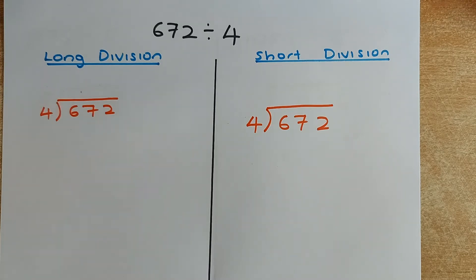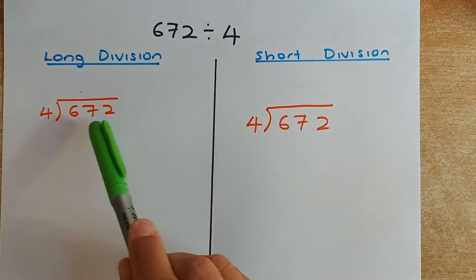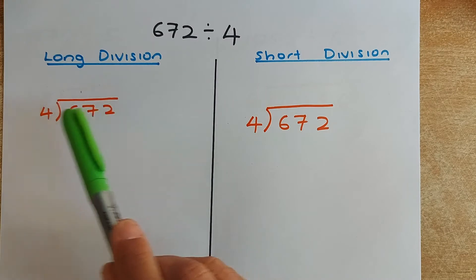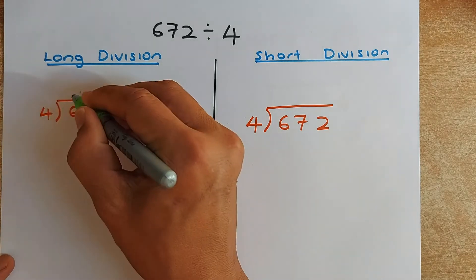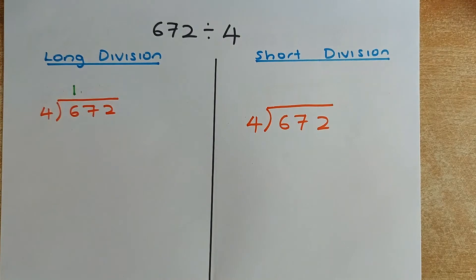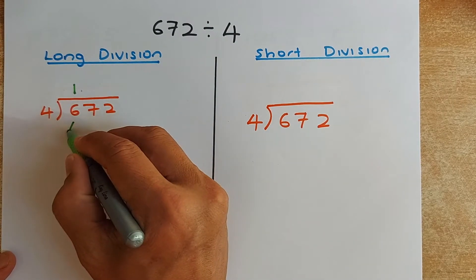So suppose we have the first question: 672 divided by 4. You are going to put 672 in this curly bracket, to be divided by the divisor 4. You need to find how many 4s can be made from 6. The answer is 1. 1 times 4 is 4, so you put 4.